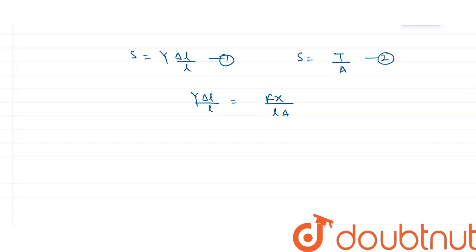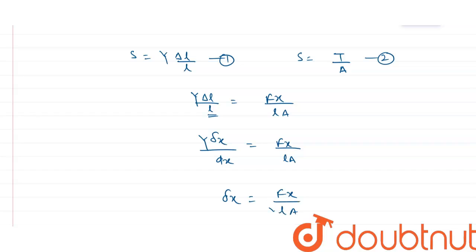Here, delta l is the change in length, or elongation, in the block. For the small segment of length dx, the elongation d(δx) equals (fx)/(l·a·y) multiplied by dx. So I can write this as: d(δx) = (f·x) / (l·a·y) · dx.